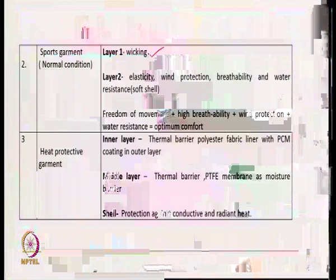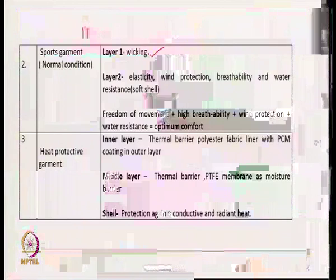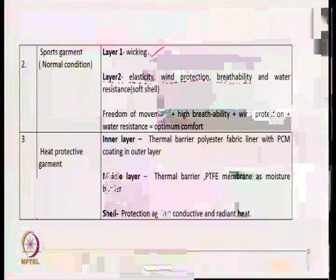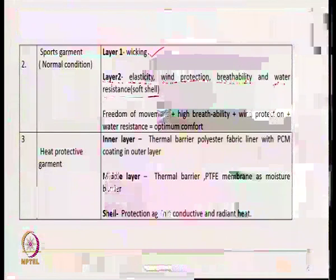Another layered architecture example is sports garments. There could be one layer close to the skin which is wicking. Highly active persons are going to generate a lot of liquid sweat, and that liquid sweat has to be taken from the skin to the surface of the sports garment. Therefore, wicking is an essential property for the layer close to the skin. The second important layer has elasticity as an important property, and can protect from wind. It has breathability and a water-resistant soft shell.